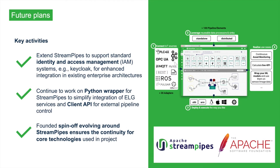In the future, we plan on pursuing the following key activities resulting from lessons learned along the way. In order to better facilitate integration in existing enterprise architectures, StreamPipes is planned to support standard identity and access management systems such as KeyCloak to complement the existing user management. In addition, work on the StreamPipes Python wrapper to simplify the development of new pipeline elements and especially the integration of ELG services is continued. Similarly, the work on the client API for external pipeline control from code is planned to be pursued. Lastly, the founded spinoff evolving around StreamPipes will further ensure the continuity for the development of core technologies used in the project.